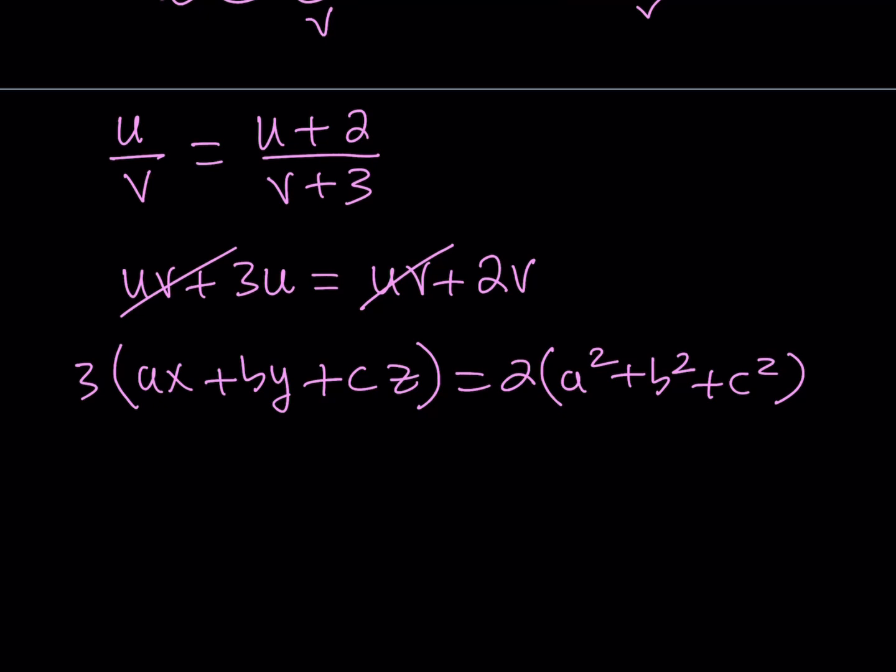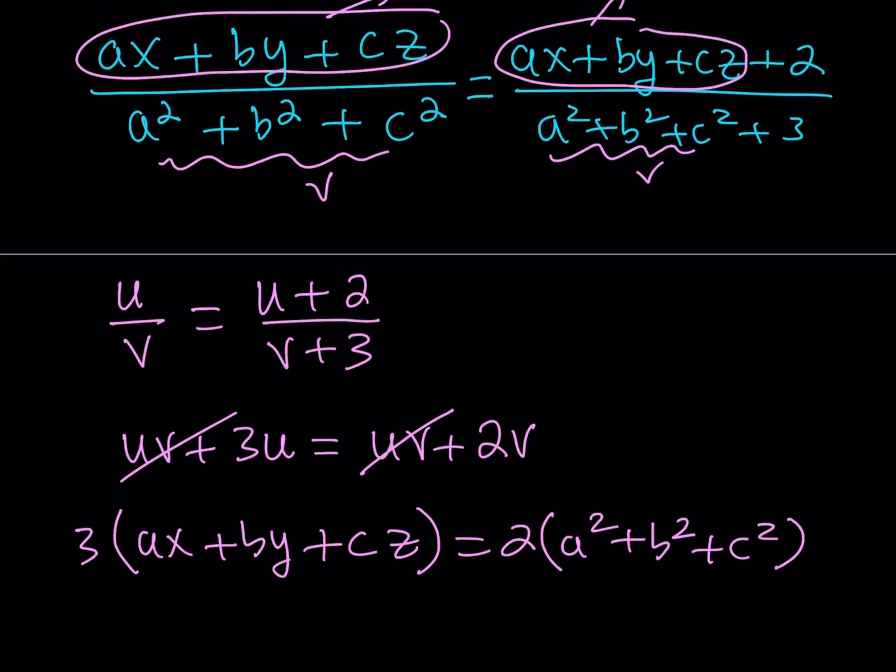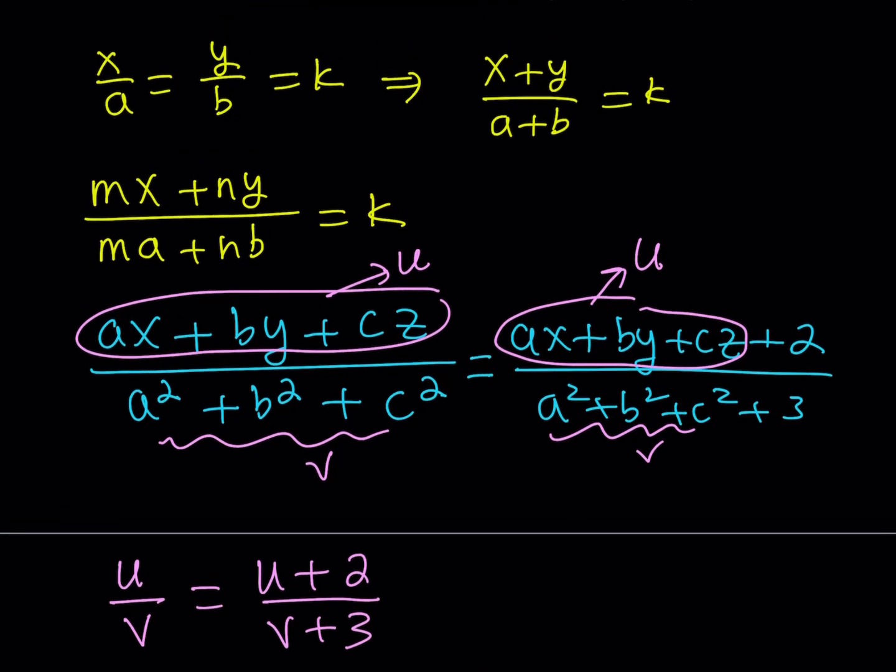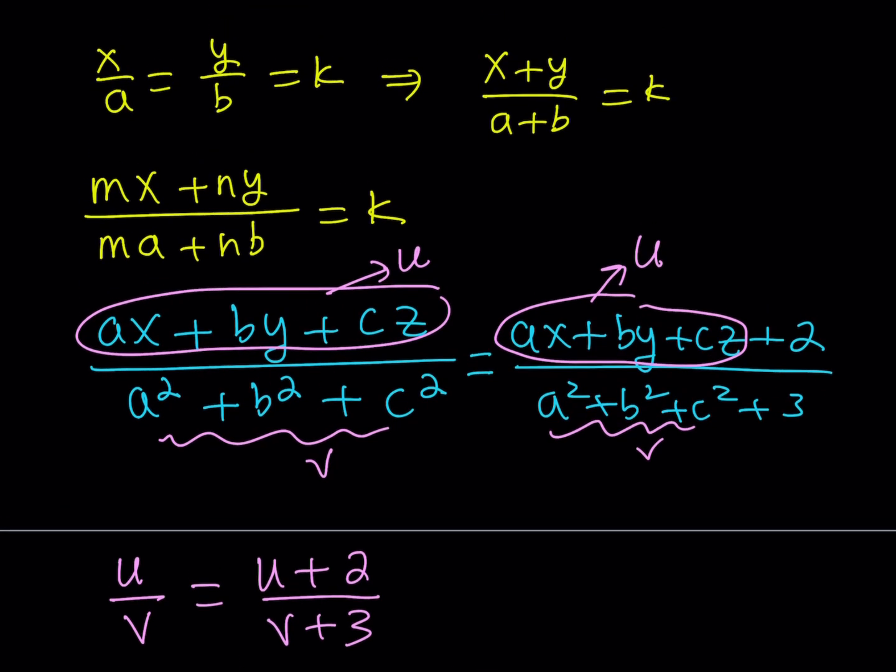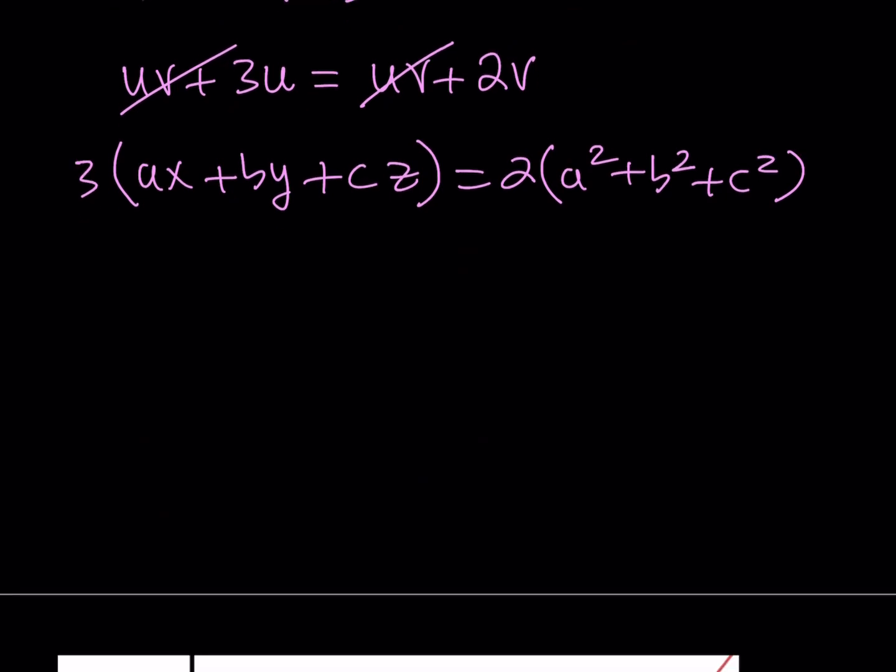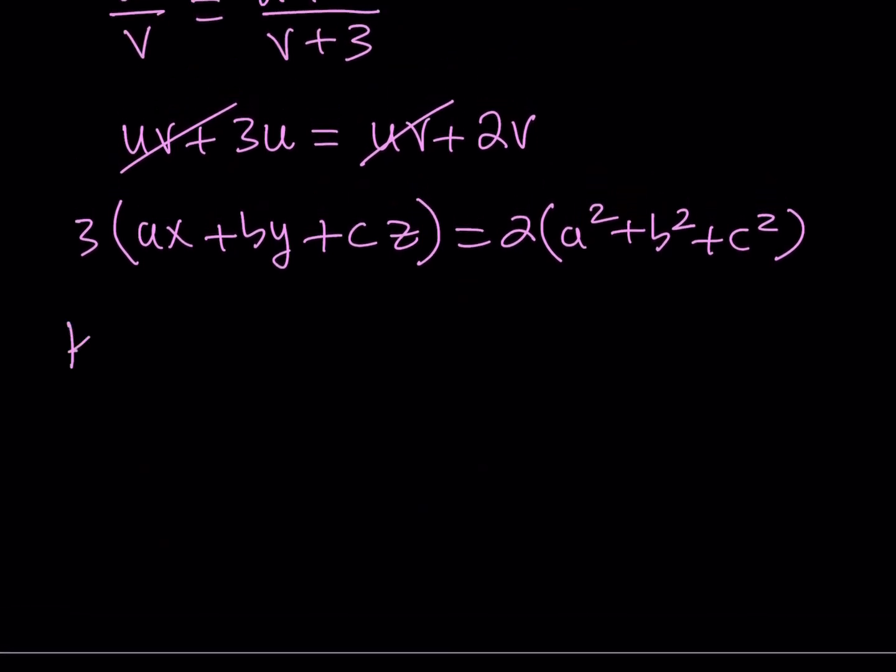So now we have this proportion. But how does this help us? You're not going to distribute and try to solve this because there are too many variables. But if you look at the original expression, our k value is equal to this ratio. So why don't we try to get that? In other words, k equals u over v.